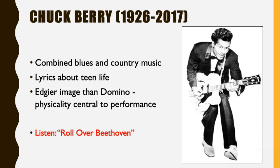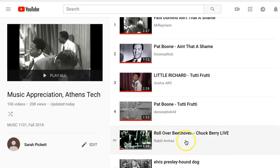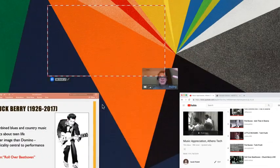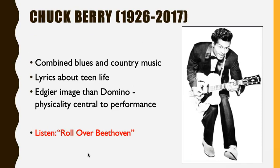Chuck Berry also writes music specifically about teen life — going on dates, getting your first car, how old people listen to boring music and young people have fun music. He was moving in the direction the record industry wanted, which was to market to very specific audiences. For this last one, I'd ask you to listen to 'Roll Over Beethoven' — a live performance from 1965. Note the physicality, his dancing and movement, his backup band, his interaction with the audience, and the lyrics. 'Roll Over Beethoven' means it's time for classical music — music by old people, for old people — to step aside and let rock and roll in.